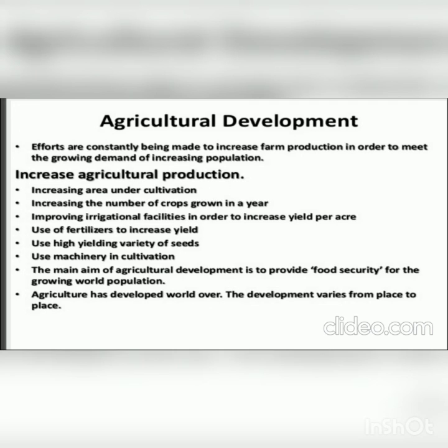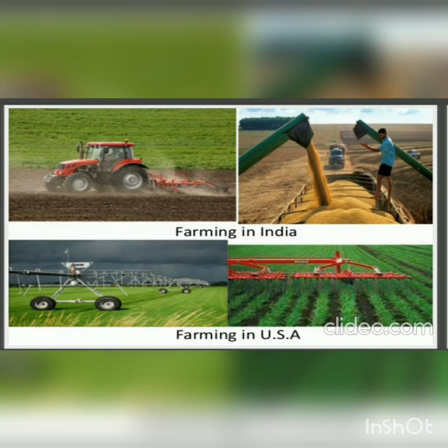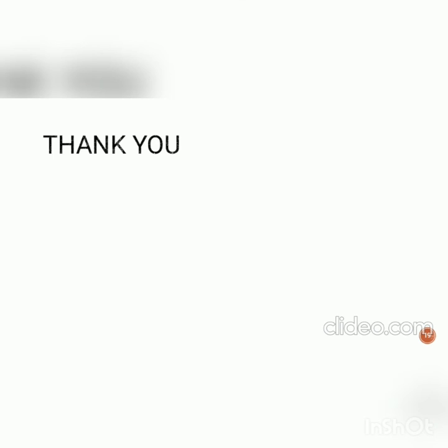Agriculture has developed worldwide, but the development varies from place to place. Here we can see the difference in farming systems between India and the USA, particularly the difference in use of machinery. Thank you, students — have a good day ahead.